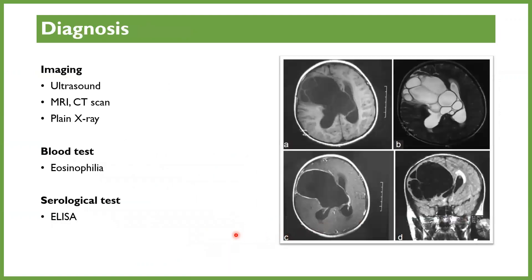Diagnosis of this is normally straightforward. Imaging would really paint a good picture after receiving the clinical manifestation — ultrasound and MRI scans will be able to show the kind of enlargement of the cyst. Blood tests showing eosinophilia will have elevated eosinophil levels because of this helminthic infection, and an ELISA test will show immunoglobulin, especially immunoglobulin G and E, being present.